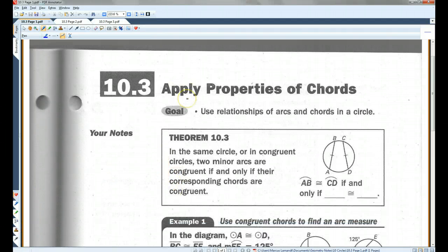Alright, 10.3, applied properties of chords. Now, if you guys remember, a chord looks something like this. They're segments whose endpoints lie on the circle. In the same circle or in congruent circles, two minor arcs are congruent if and only if their corresponding chords are congruent.